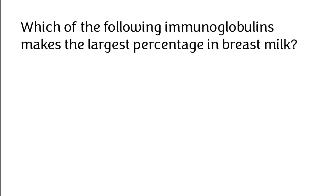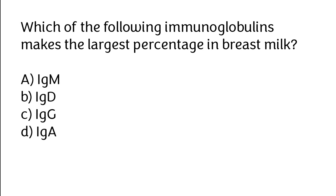Which of the following immunoglobulins makes the largest percentage in breast milk? IgM, IgD, IgG, or IgA. The correct answer is option D: IgA makes the largest percentage in breast milk.